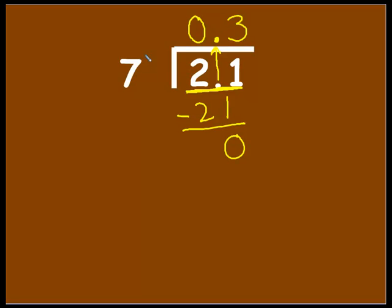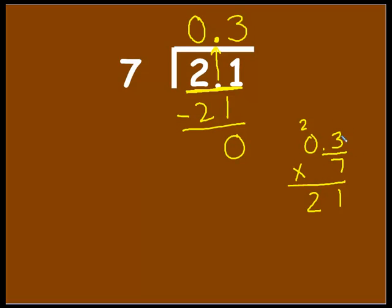We know if we check with multiplication, we can do a multiplication problem. 3 times 7 is 21 — put down the 1, regroup the 2. 7 times 0 is 0, plus that 2 would be 2. I look up in my problem and I see there is only one digit behind the decimal, so I put one digit behind the decimal in my product. Both of them match, so I've checked my work and I know I am correct.